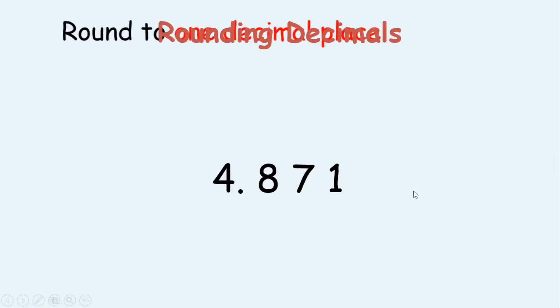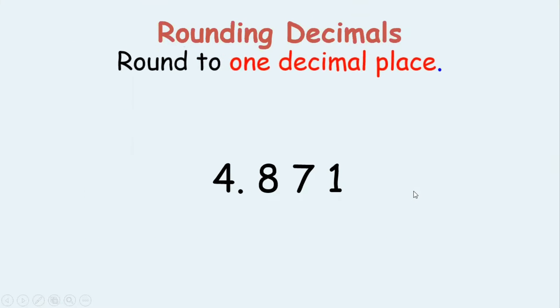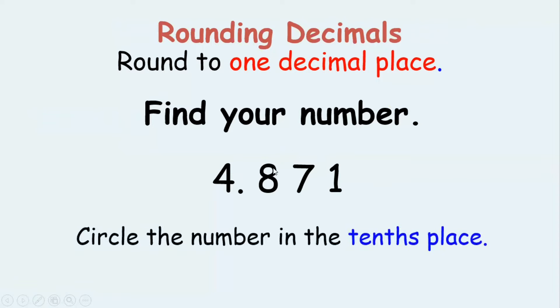Let us see how we use this poem here. Round to one decimal place. When we are rounding the number 4.871 to one decimal place, we circle the number in the tenths place and then we look at the next number. It is seven. If it is five or more, we add one here.